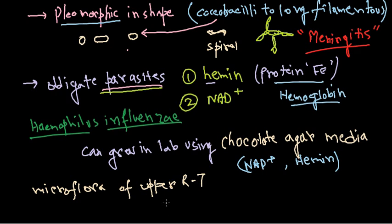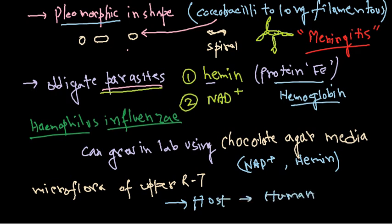Another very important concept is that this bacteria has only one host — humans. It cannot infect other organisms like pets or cattle. That is why the only reason for spreading is via human-to-human contact.